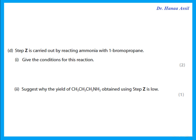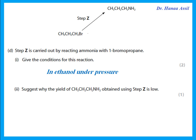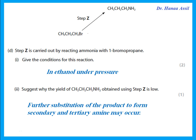Step Z is carried out by reacting ammonia with 1-bromopropane. The conditions are ethanol in a sealed tube (or under pressure). The yield of the primary amine is low because the reaction does not stop at the primary amine — further substitution of the product continues to form secondary and tertiary amines.